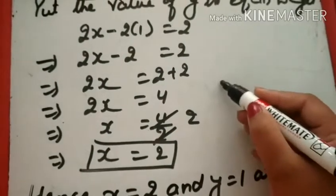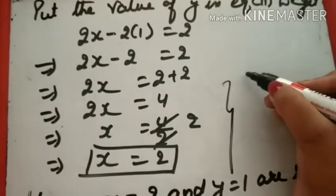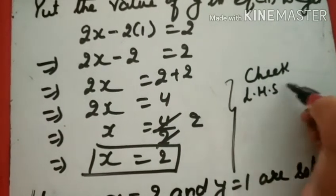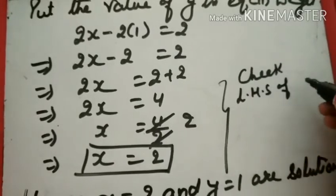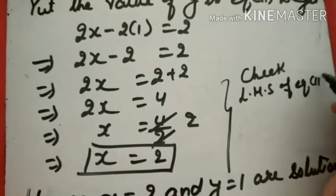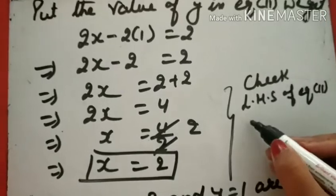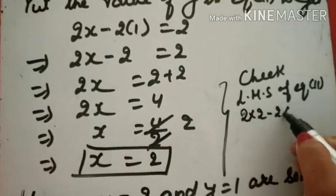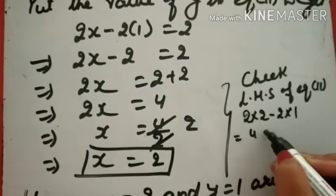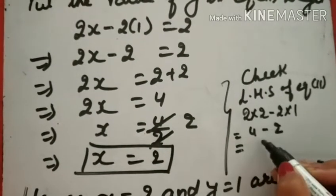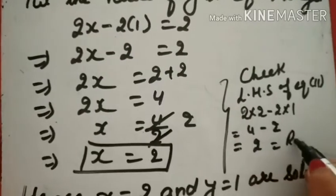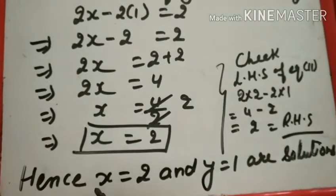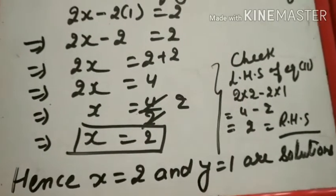आप चाहो तो check कर सकते हो। LHS of Equation Second: 2X − 2Y = 2(2) − 2(1) = 4 − 2 = 2, which is equal to RHS. Therefore X = 2 and Y = 1 are the solution.